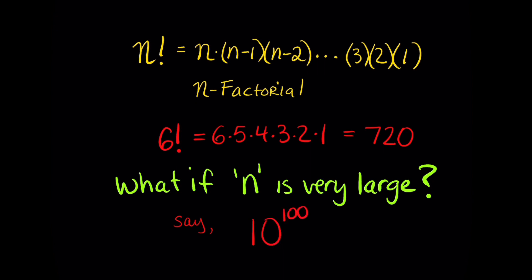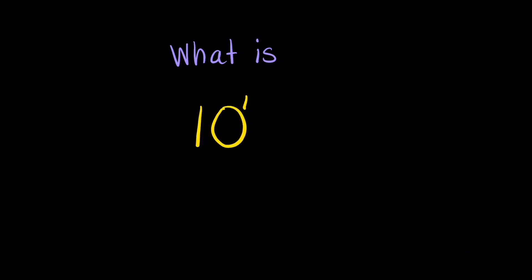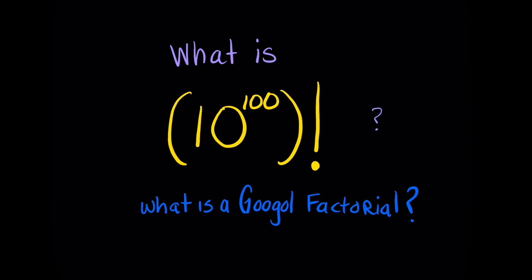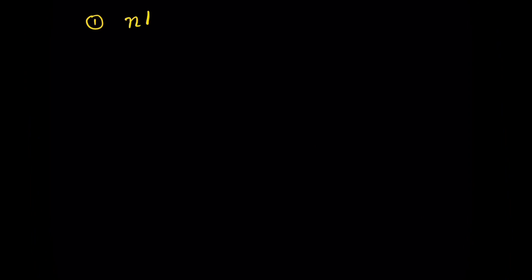What if n were 10 to the 100th power, or a googol? A googol is just a 1 with a hundred zeros at the end of it. What would a googol factorial be equal to? That surely must be an astronomical number. We're going to need a very powerful estimation tool to approximate this number — that's where Stirling's formula comes in.